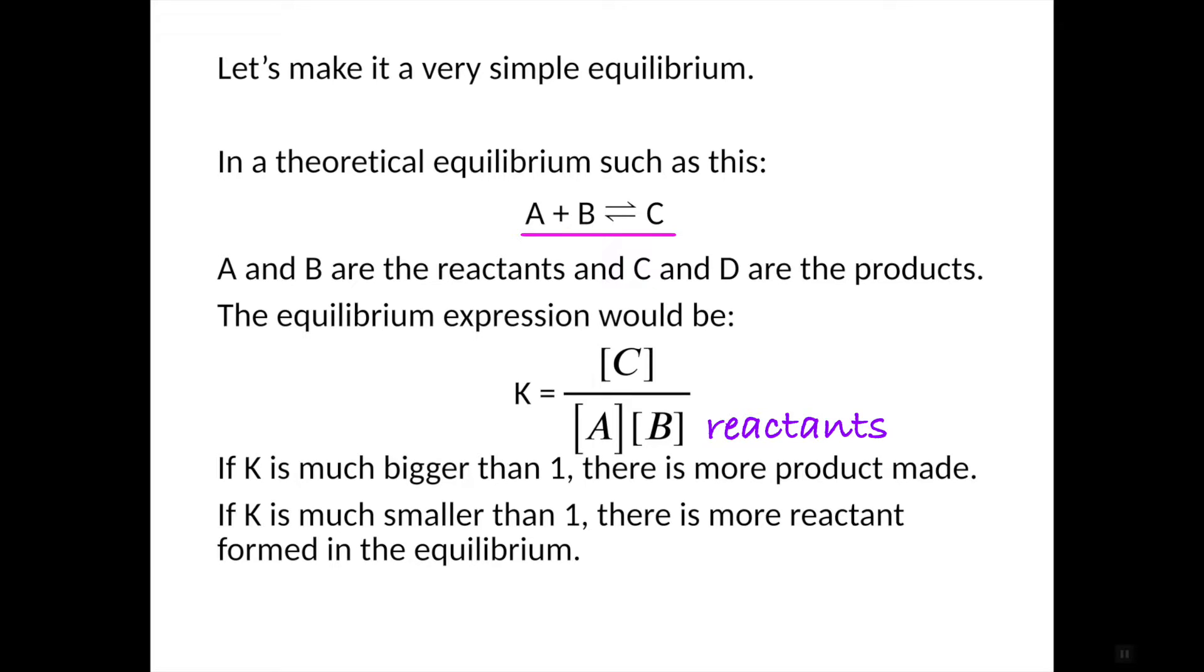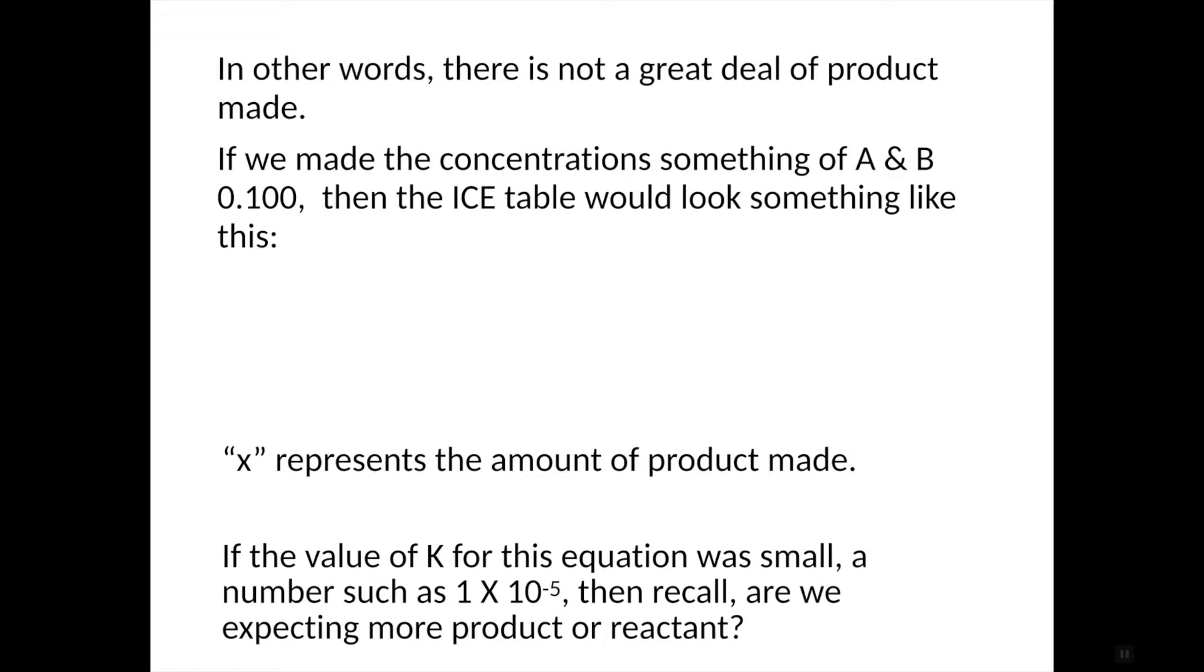If K is much smaller than 1, or just smaller than 1 in general, it means there is more reactant or reactants. So this is what the number tells us, whether we're more product heavy or more reactant heavy when we do reach equilibrium.